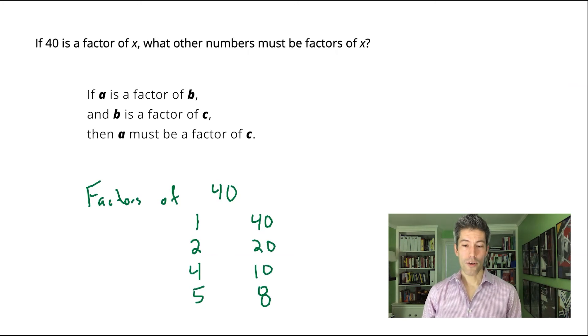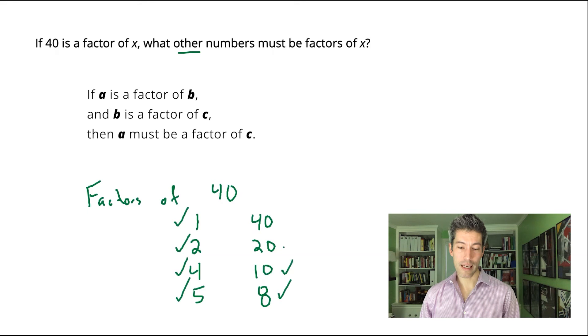So what other numbers must be factors of x? If 40 is a factor of x, well, all the factors of 40, all the other factors of 40. We've already counted 40 once, so we're just going to count the other ones. Every number with the check mark here represents another number that has to be a factor of x. The essential skill for solving this problem is an understanding of this principle.